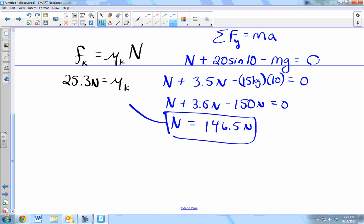Can't do math. Now we know normal force. Plug it in over there. 25.3 newtons equals mu k times 146.5 newtons. And so the coefficient of friction is that value.